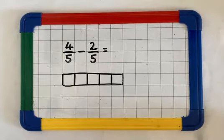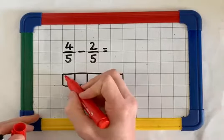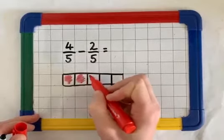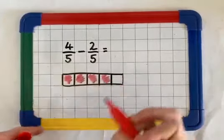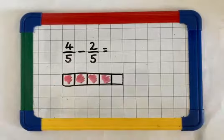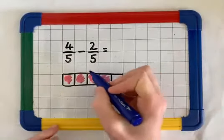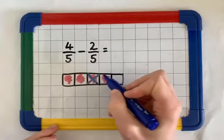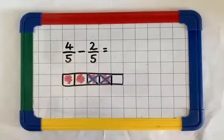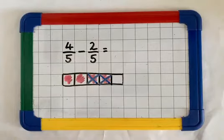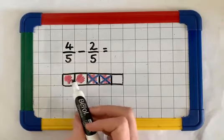And to start with, we have 4 of them. 4 fifths. Now we're taking away 2 fifths. So I'm going to take my blue pen and just cross out 2 of them. How many fifths do I have left? I have 1, 2.